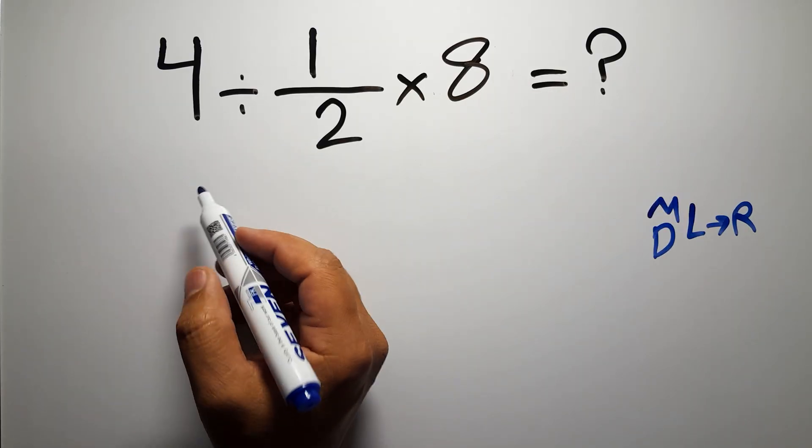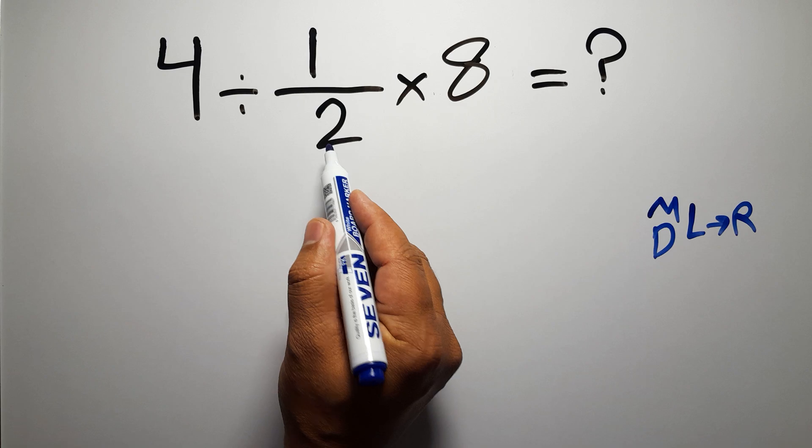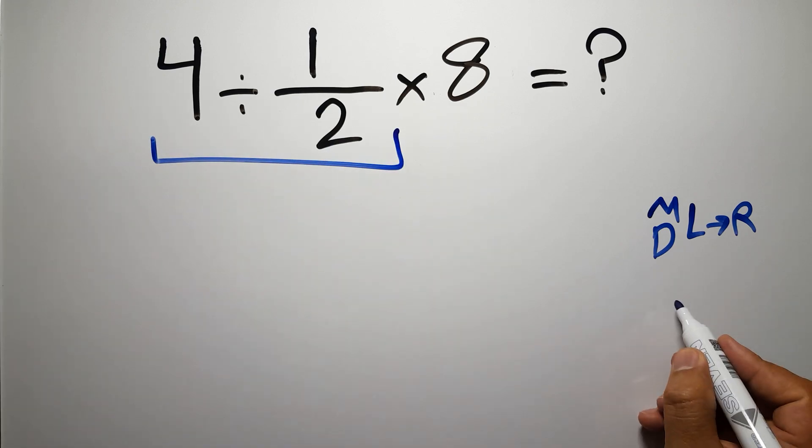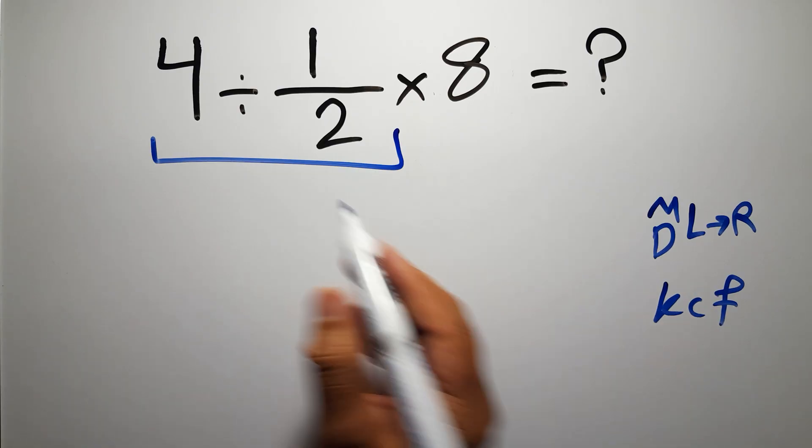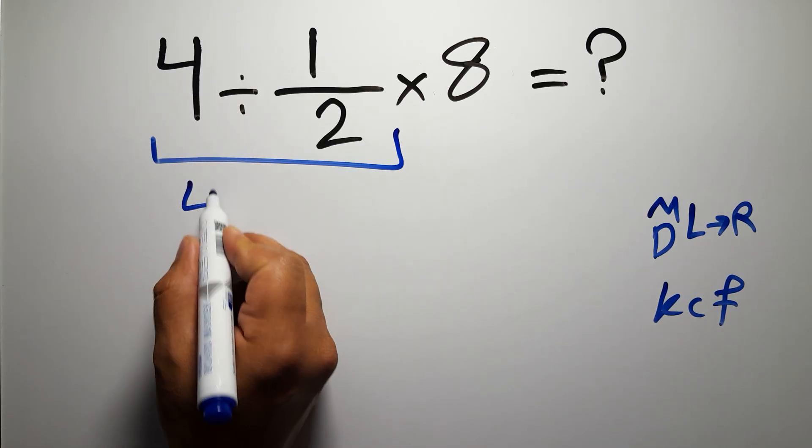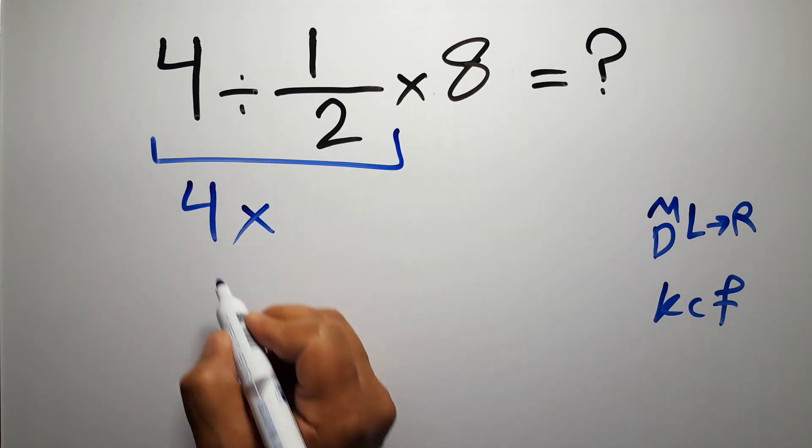So first this division: 4 divided by 1 over 2. According to the KCF rule—K stands for keep, C stands for change, and F stands for flip—we can write: keep the first fraction, change division to multiplication, and flip the second fraction.